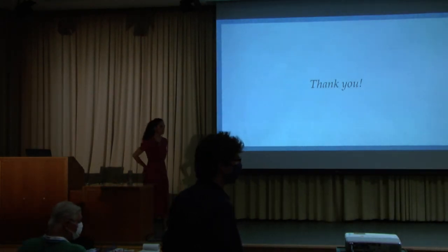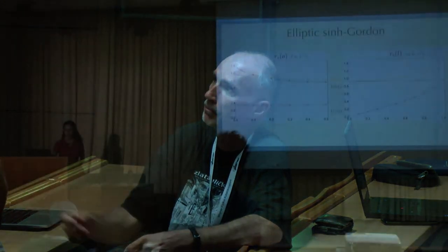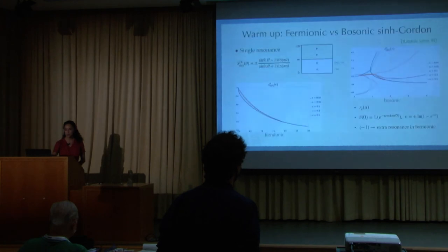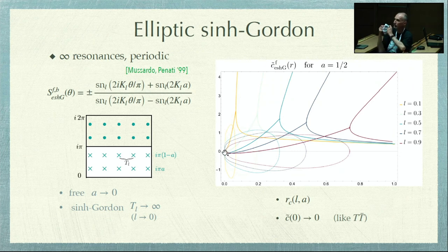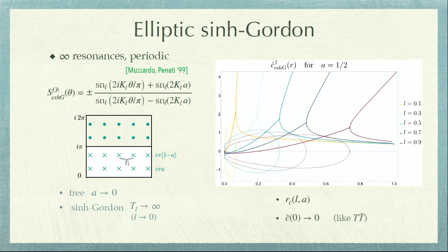Since you did this extensive numerics, have you tried to fit the correction to the central charge? Because from this you can figure out the dimension of the perturbing operator. Yes, this is something we want to do but haven't done yet. In practice, it would be much easier to do for small K, because it's harder to parameterize infinite resonances, and this goes to zero very abruptly. But it's something we want to do.